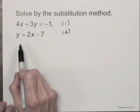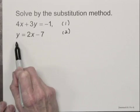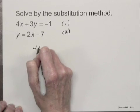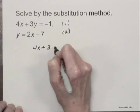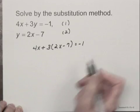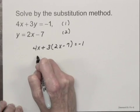To begin the solution, I'm going to substitute 2x minus 7 for y in equation 1. So I would have 4x plus 3 times the quantity 2x minus 7 equals negative 1.